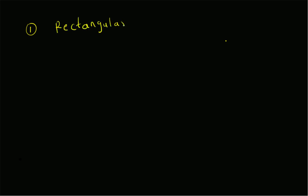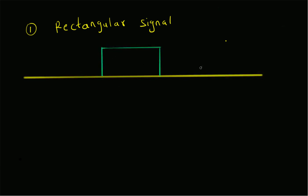Hello, welcome. In this short video, let us look at the plotting of the rectangle signal and also a square wave signal of length equal to two periods. The first one is a rectangular signal which has the following shape: it starts at minus a and ends at plus a, and the value is one. This is a rectangle signal.